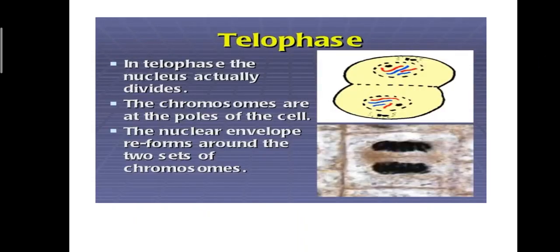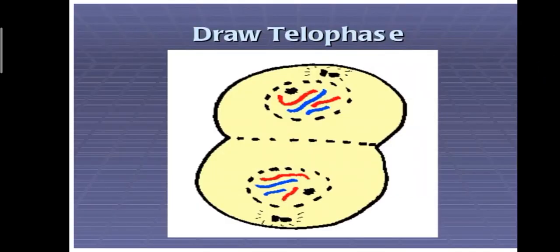Then last, telophase. In telophase, the nucleus actually divides. The chromosomes are at the poles of the cell and the nuclear envelope reforms around the two sets of chromatids. You can draw the diagrammatic representation of telophase.